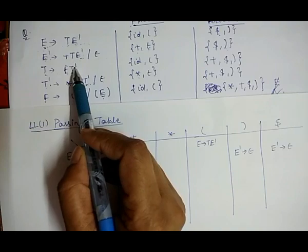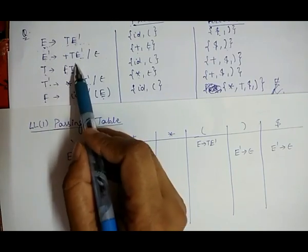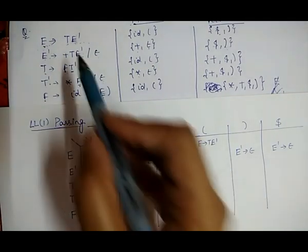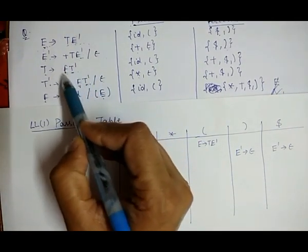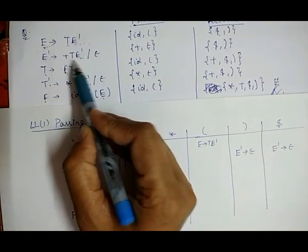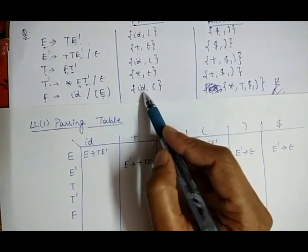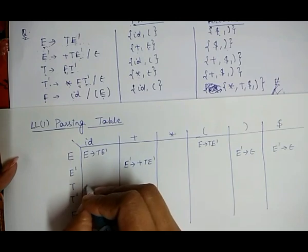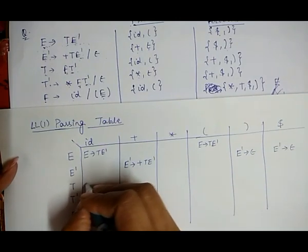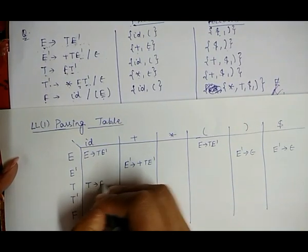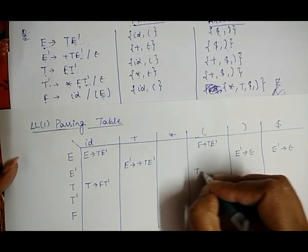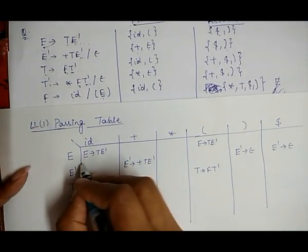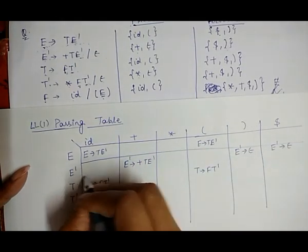The third grammar is T → FT'. There is only a single choice. We compute FIRST(FT'), which equals FIRST(F), and FIRST(F) is {id, open brace}. So under the id and open brace columns we place T → FT'.